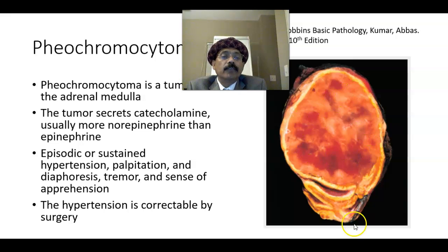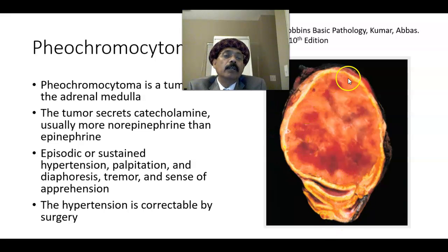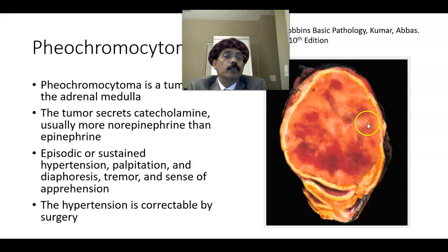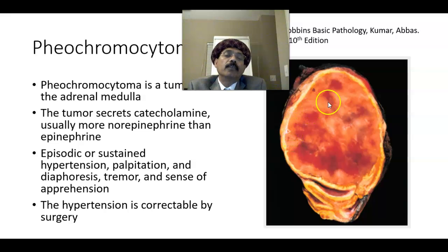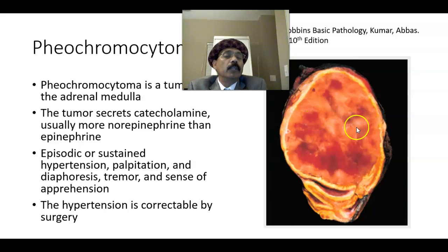Looking at this tumor — this is the adrenal gland and this is the tumor of the adrenal medulla, with the remaining part of the adrenal gland visible here. This adrenal tumor has hemorrhagic sites; the color is gray and pinkish. The size is variable — it may be a few centimeters or several centimeters, and the weight may range from a few grams to several kilograms.